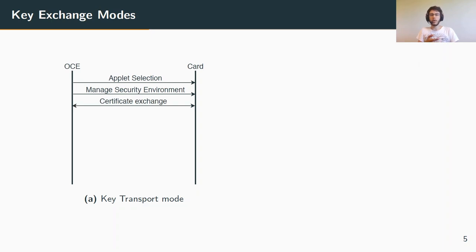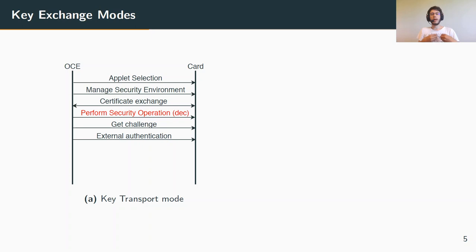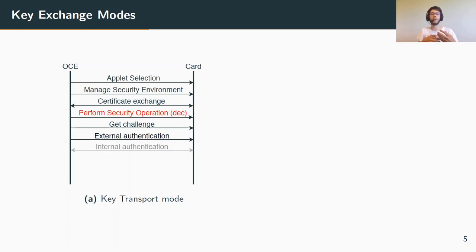In key transport mode, the off-card entity starts by sending two APDUs to the smart card: the first selects the applet responsible for SCP-10, and the second sets security parameters, namely the key exchange mode. Following these setup APDUs, there is a classical certificate exchange with verification from both parties. Then comes the key part: the perform security operation decryption APDU, where the off-card entity generates session keys, encrypts them with the card's public key, and sends them. Only after sending these raw session keys does the off-card entity authenticate itself by signing a challenge. An optional internal authentication is possible but can be skipped to avoid heavy computation.